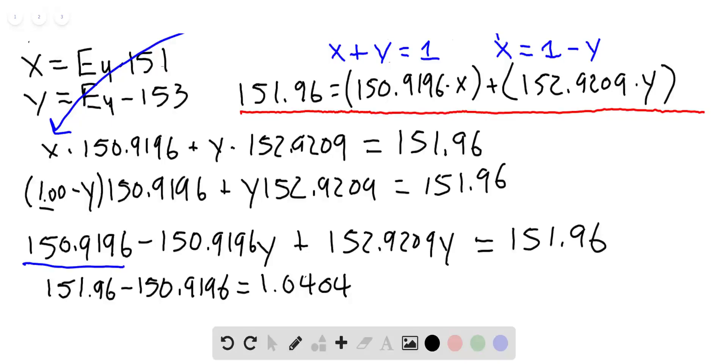Now if we take a look and we're going to combine our y's, we'll do this on the next page. So now I have the negative 150.9196y plus the 152.9209y equals the 1.0404.